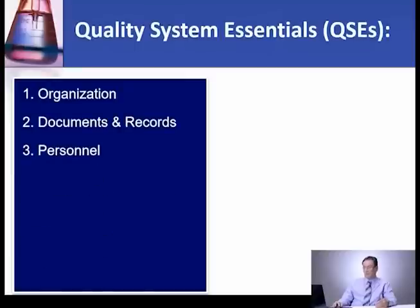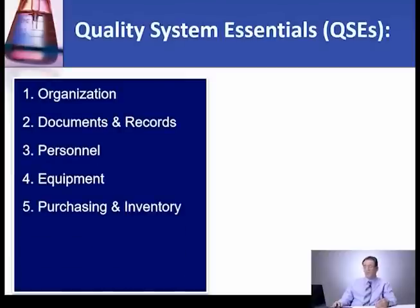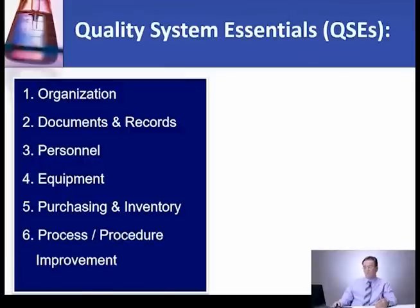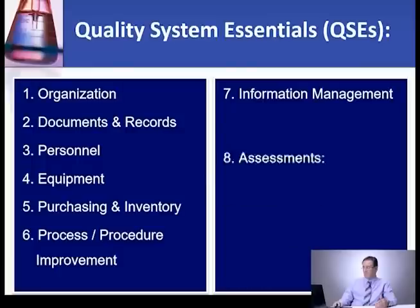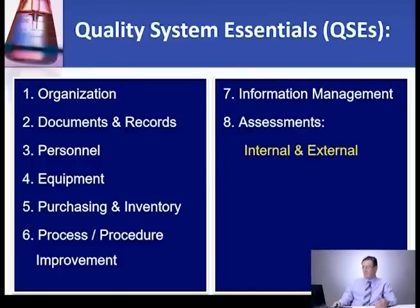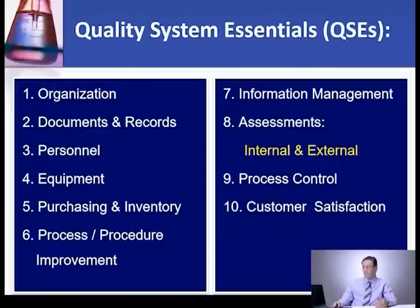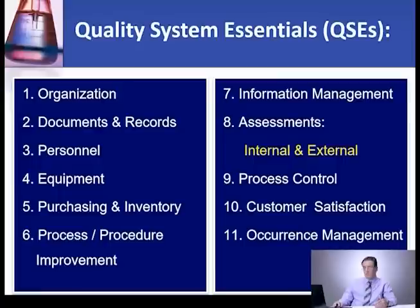The 12 quality system essentials are: 1) Organization, 2) Documents and Records, 3) Personnel, 4) Equipment, 5) Purchasing and Inventory, 6) Process/Procedure, 7) Improvement, 8) Information Management, 9) Assessment — internal and external, 10) Process Control, 11) Customer Satisfaction, 12) Occurrence Management, and facilities and safety. Your quality management program must include all 12 of these elements.